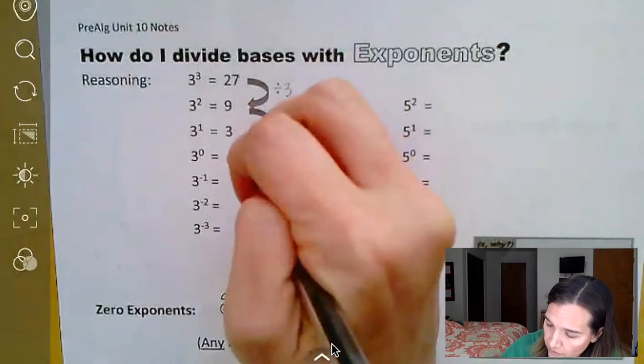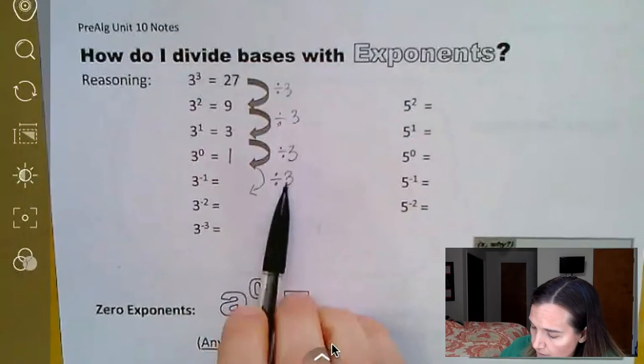So now we get to some negative exponent rules. And if you think about it, we're going to keep going. We're going to divide by three again. And if I take one and divide it by three, I get one third.